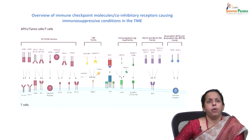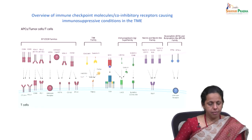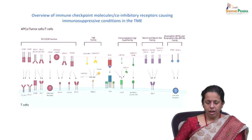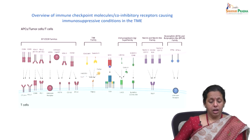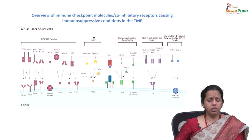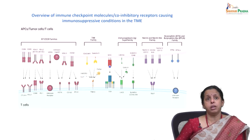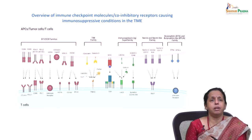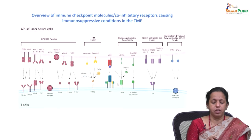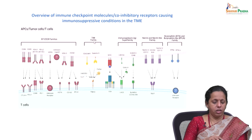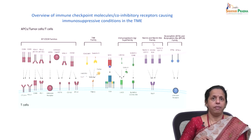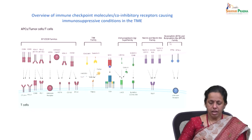The different families of checkpoint molecules include the B7/CD28 family, the TIM family, the immunoglobulin superfamily, Nectin and Nectin-like families, and the BTN and BTN-like families. These different immune checkpoint molecules and co-inhibitory receptors cause immunosuppressive conditions in the tumor microenvironment and are grouped accordingly.